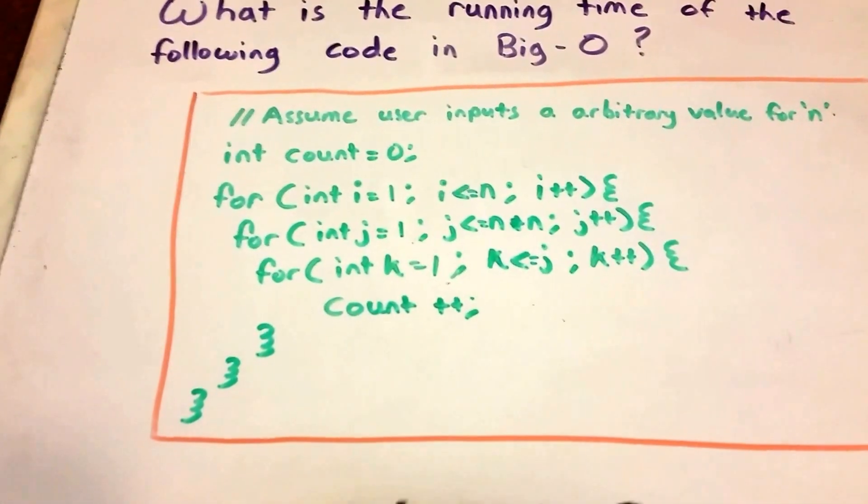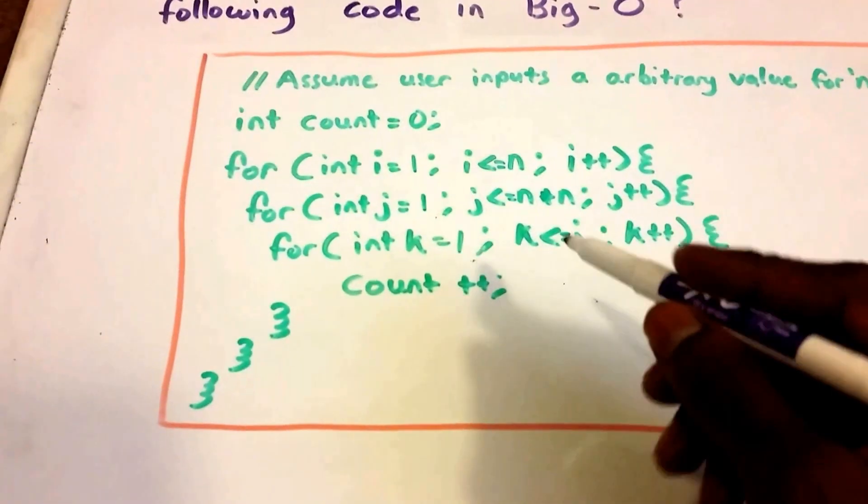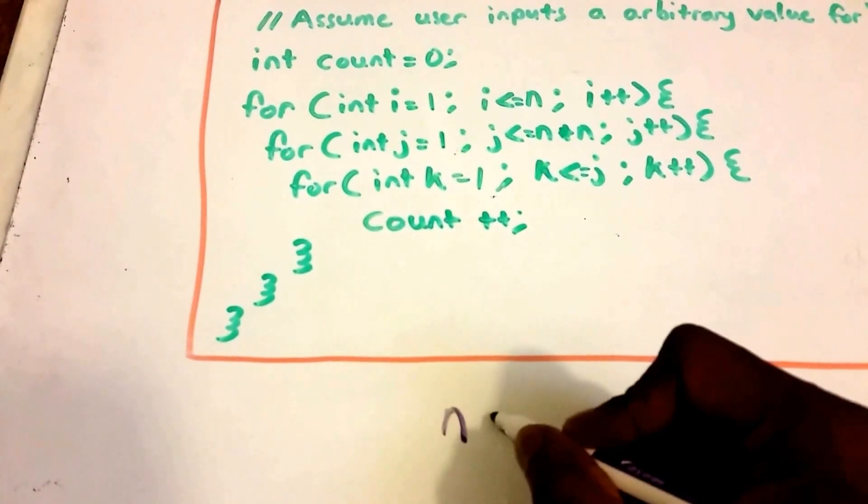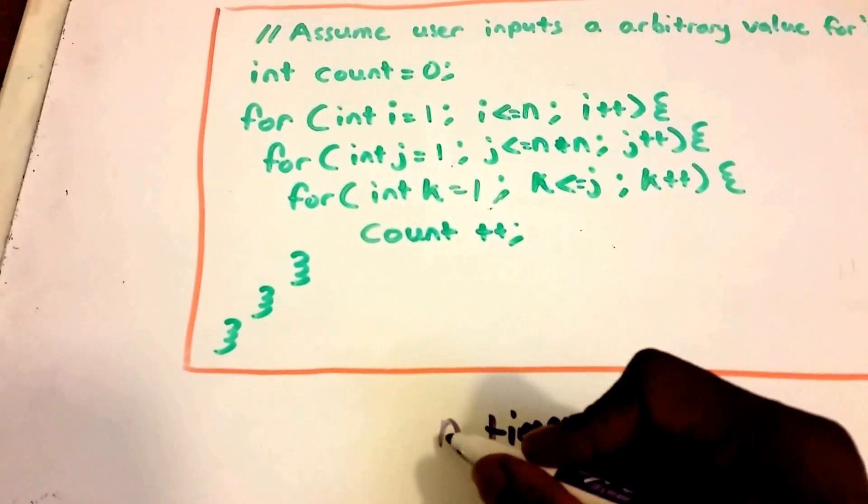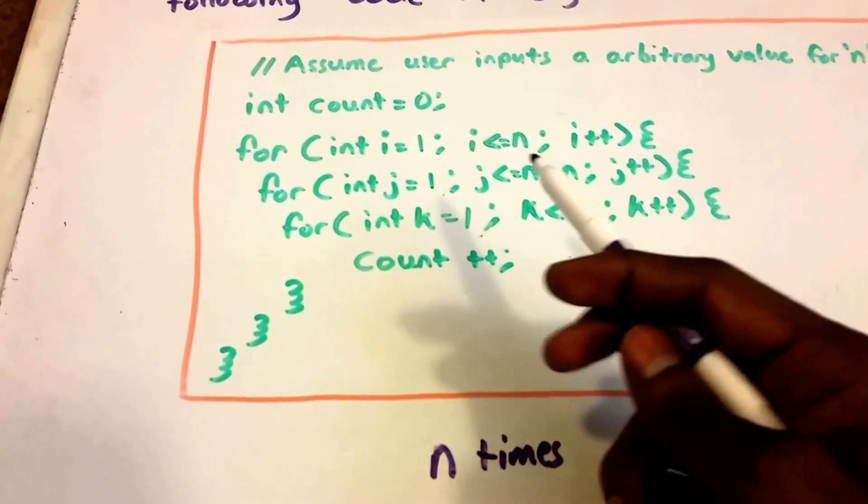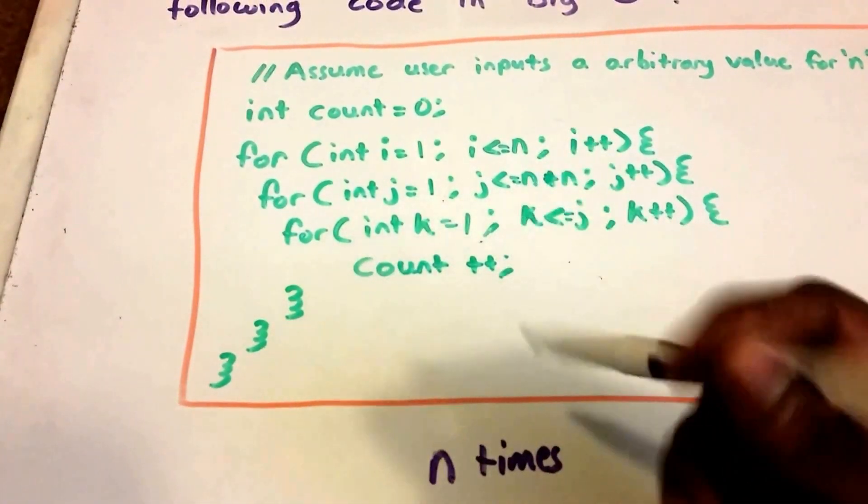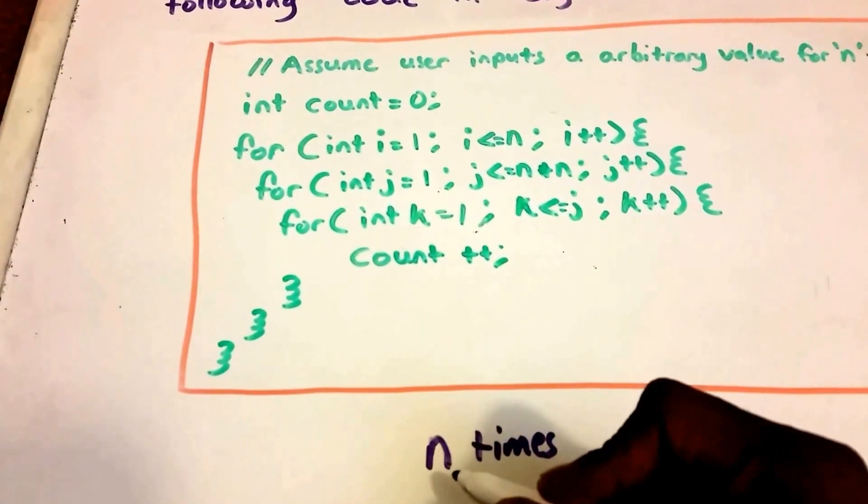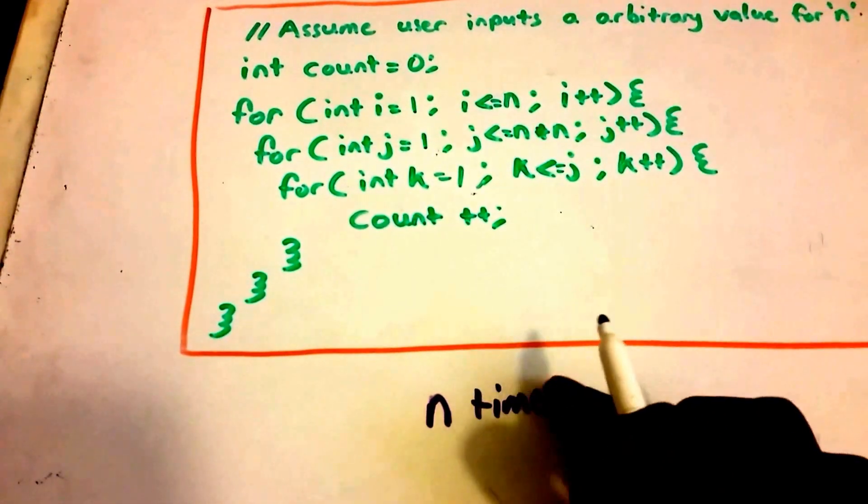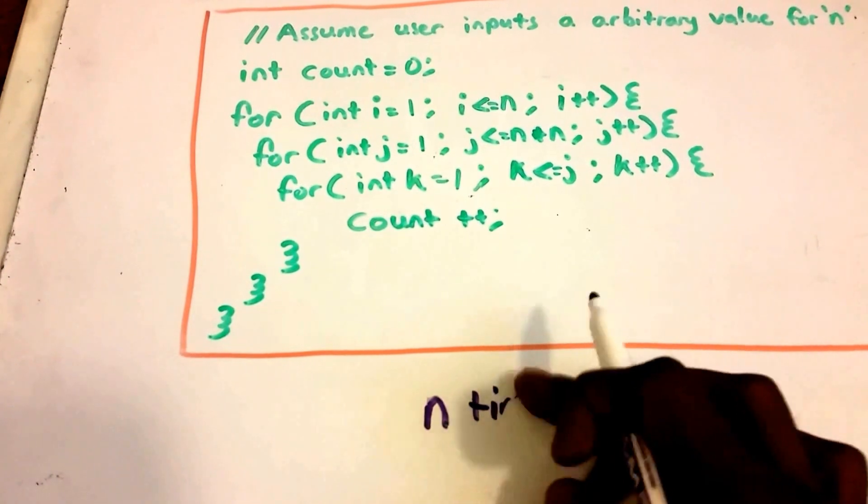All right, so what's the Big O of this code? Just by looking at it and doing some analysis, the first loop runs n times. I'm going to break it down using math. The second loop runs n times n times, so we have n and then we multiply that by n times.